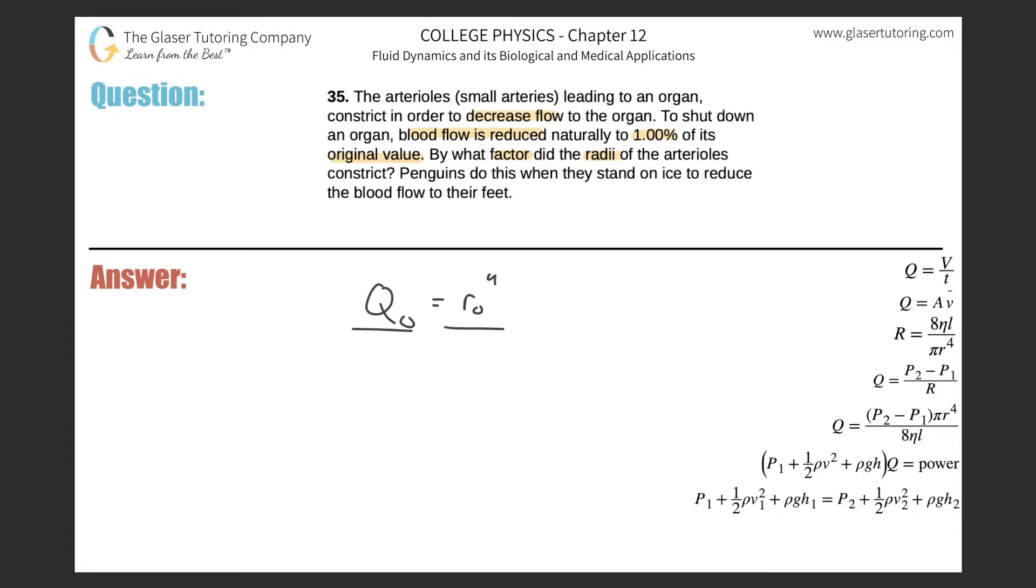And then I can create a nice little ratio here. I can say that my new Q value would be equal to, essentially since I'm creating a ratio, the new radius raised to the fourth. So what we want to do is we need to find out how much this radius changed by.